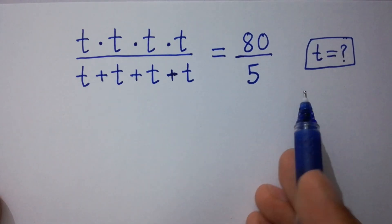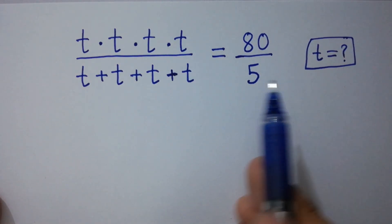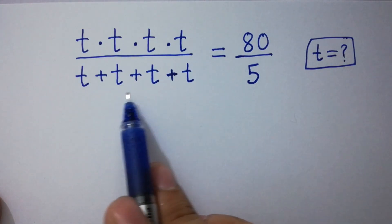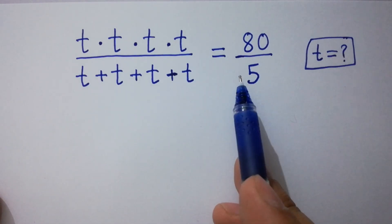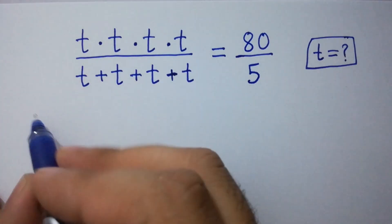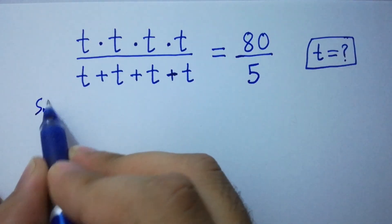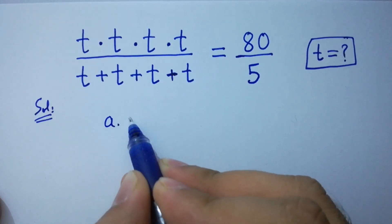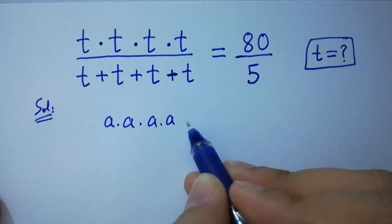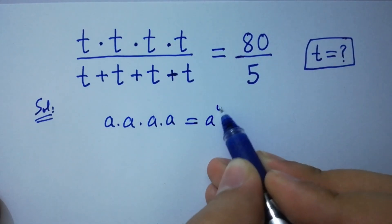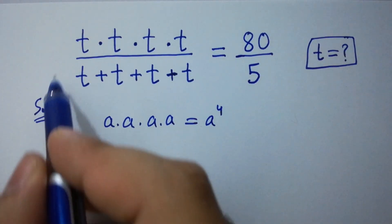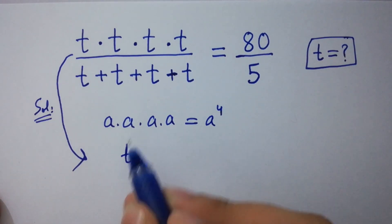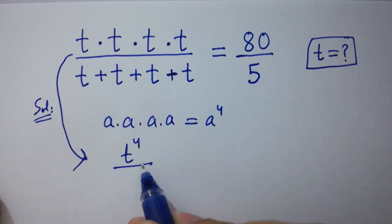Hello friends, find the value of t if t times t times t times t over t plus t plus t plus t equals 80 over 5. Let's have a solution. As we know, a times a times a times a equals a to the power 4, then it will be t to the power 4 over here.